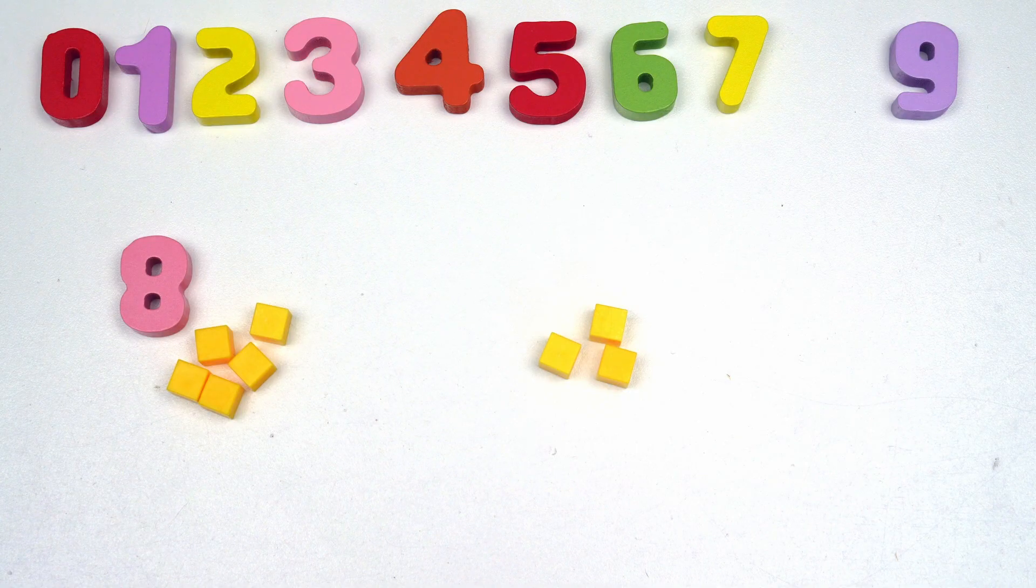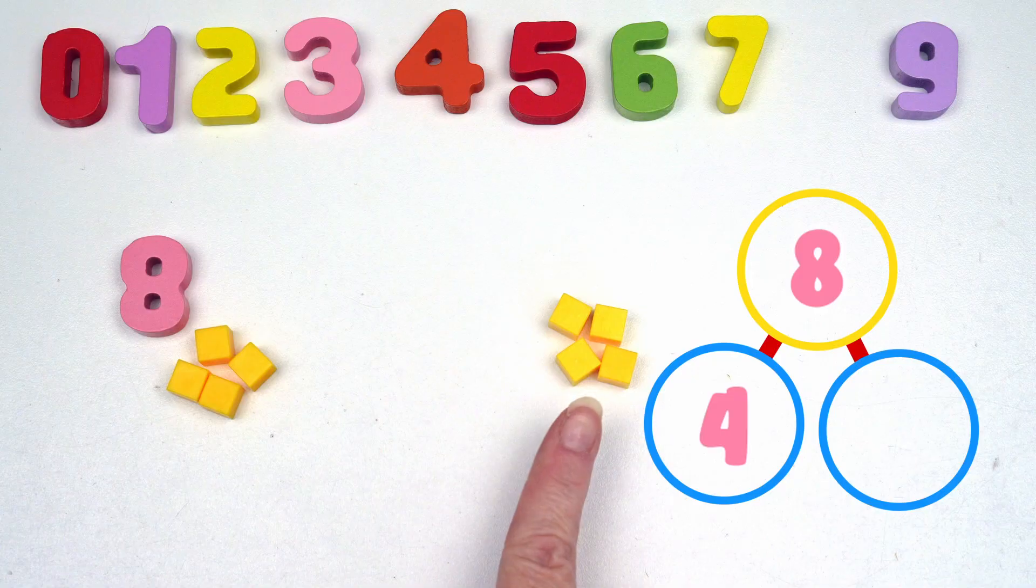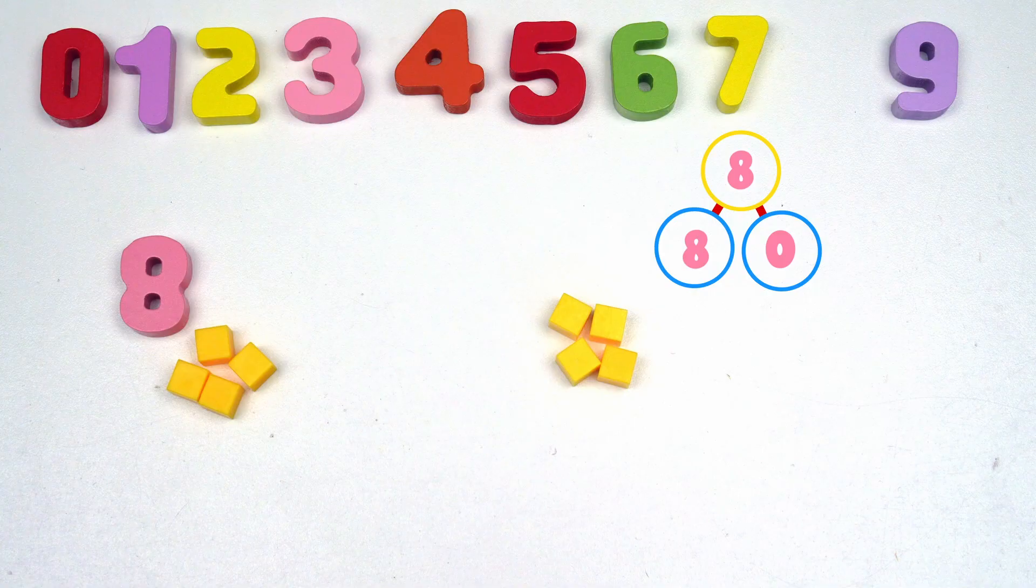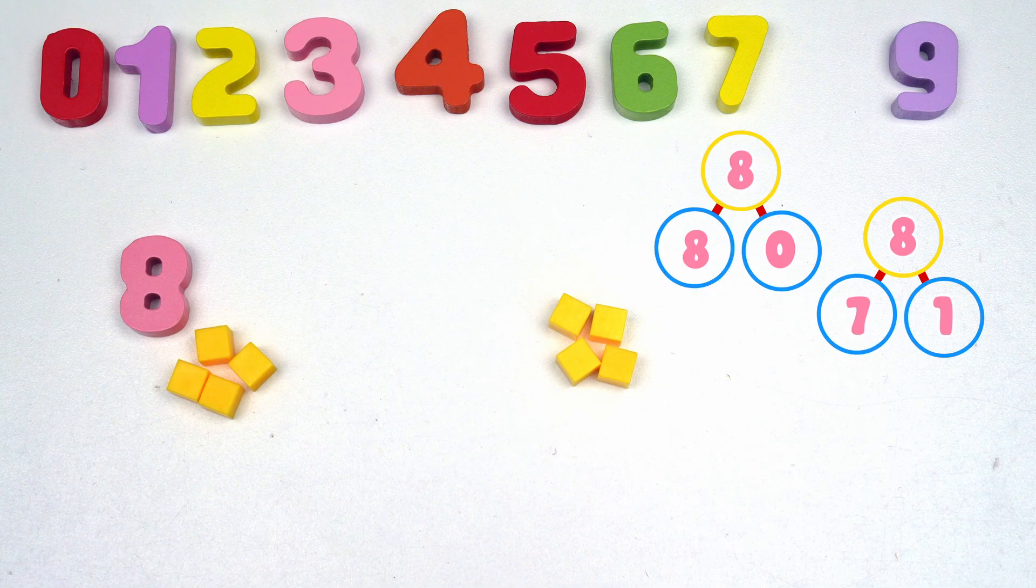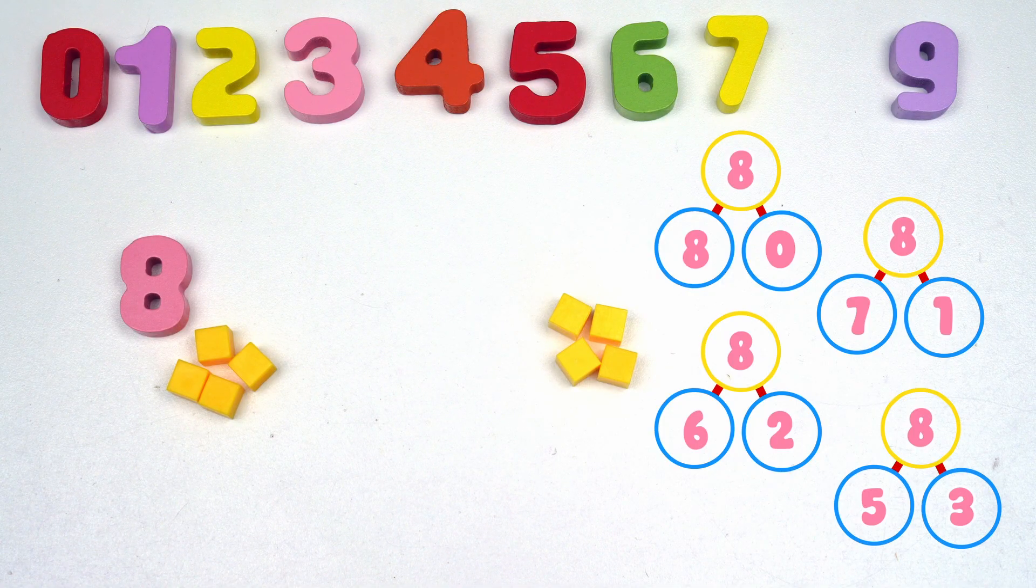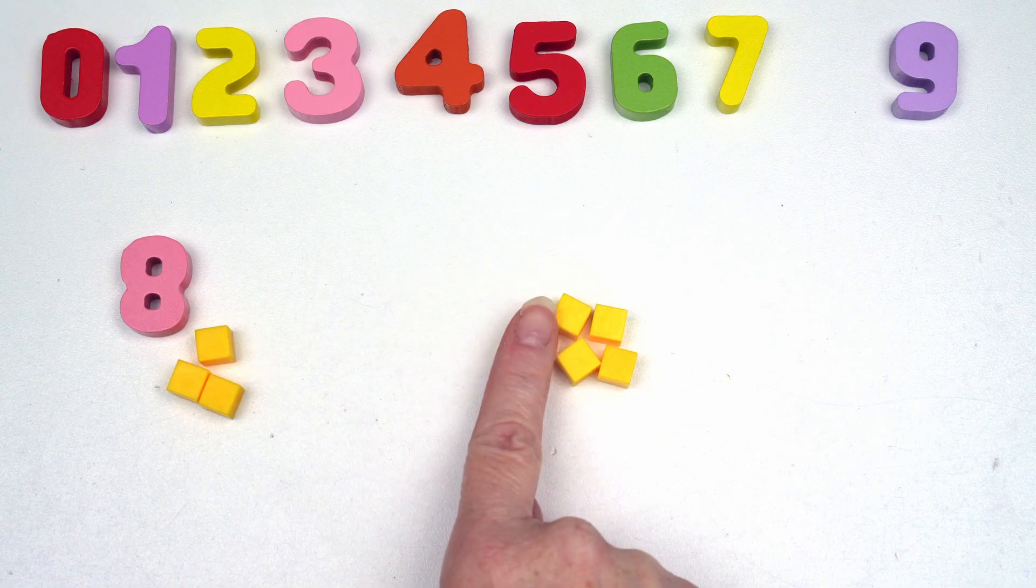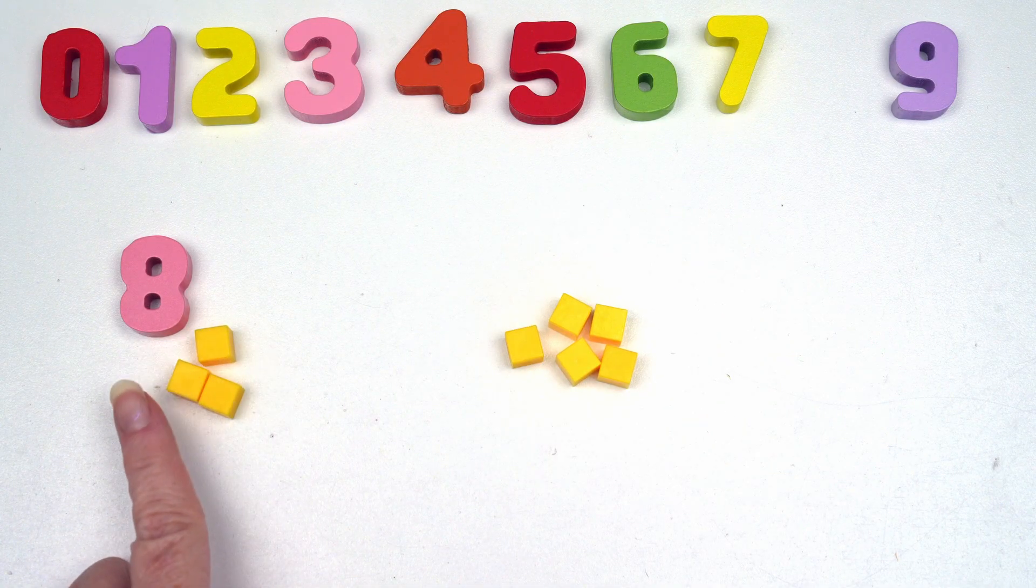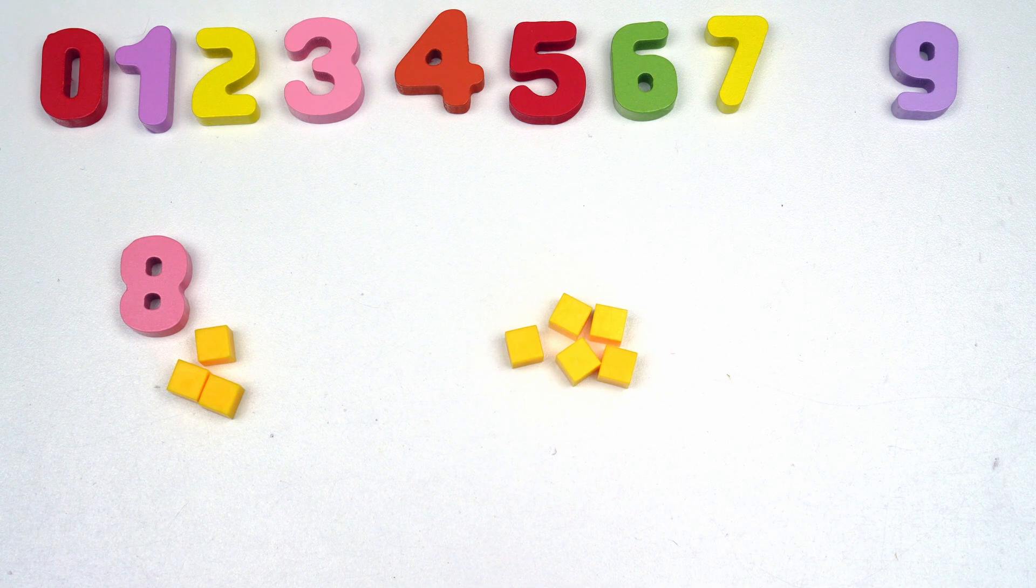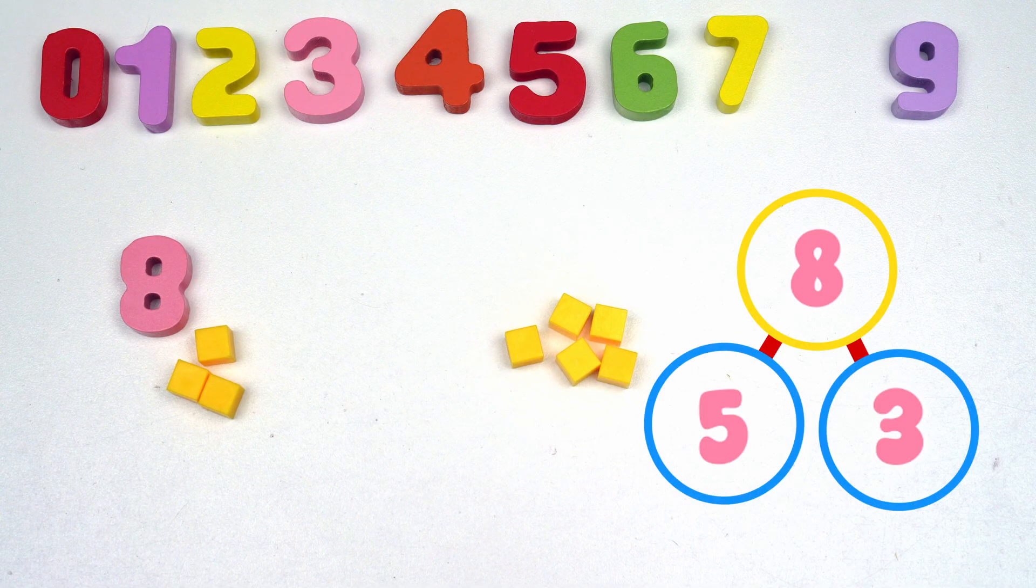And then our last number bond for eight would be four and four. So we would have zero and eight, one and seven, two and six, three and five, and four and four. Because if we kept moving our blocks, we have one, two, three, one, two, three, four, five, three and five. But we already have that number bond when we did five and three.